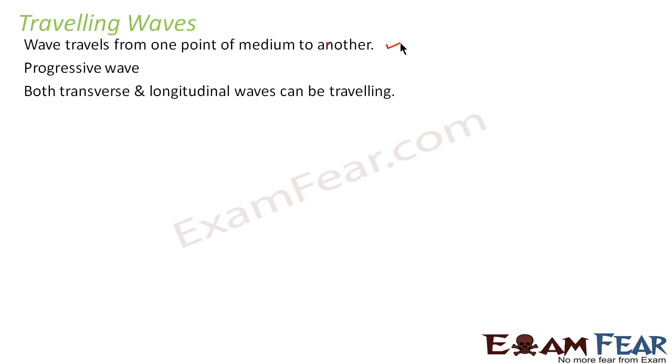Both transverse and longitudinal waves can be travelling. So both the waves, that is transverse waves as well as longitudinal waves, they can be considered as a travelling wave. Because in both the waves we see that the wave moves from one point to another. So the wave propagates from one point to another. So we can see displacement along the horizontal direction. So we see that they can be classified as travelling waves.